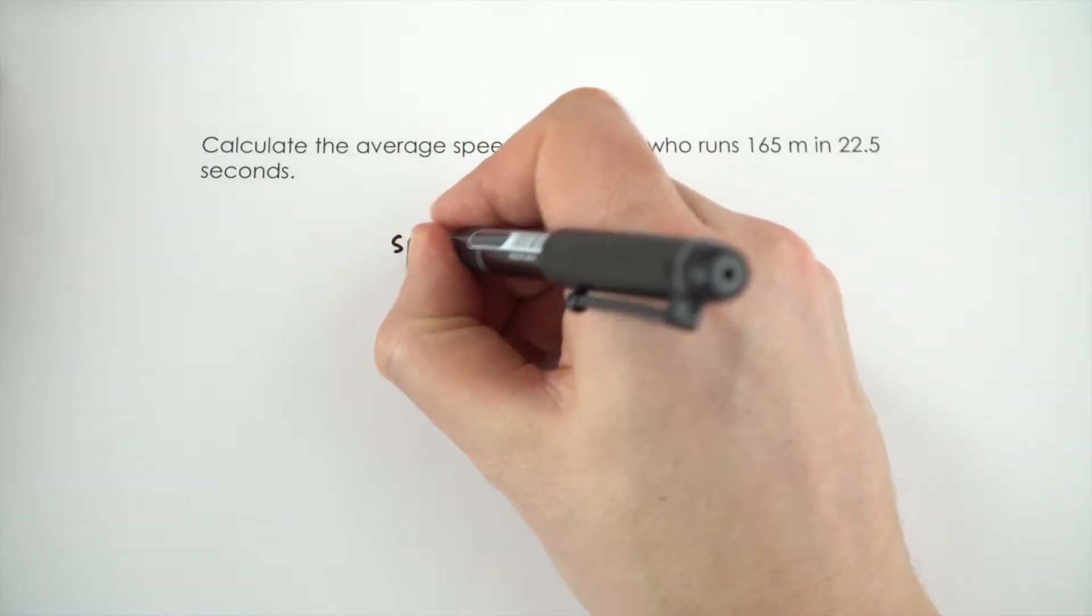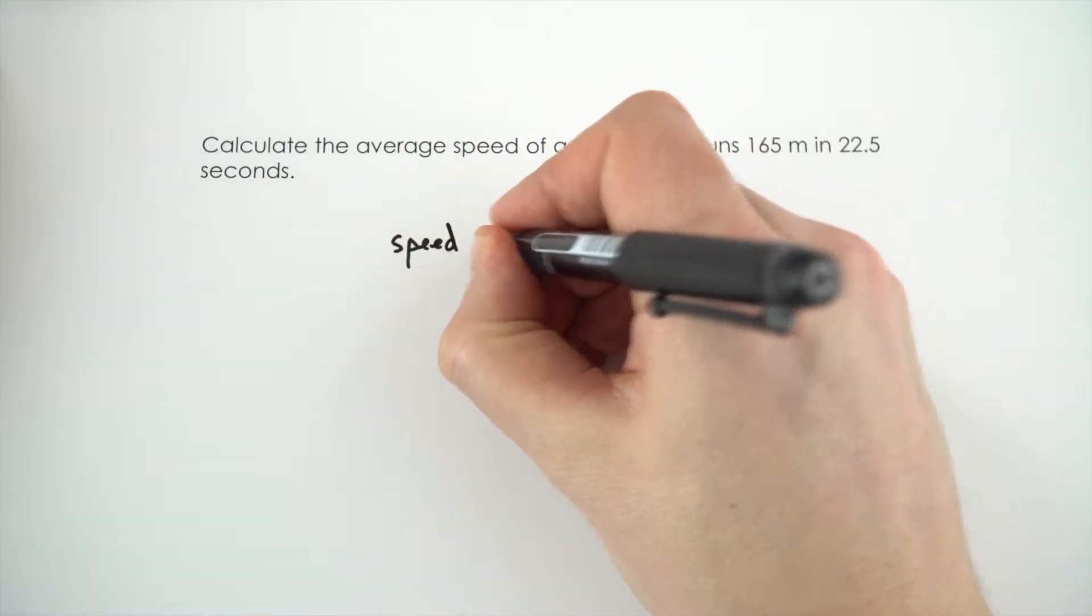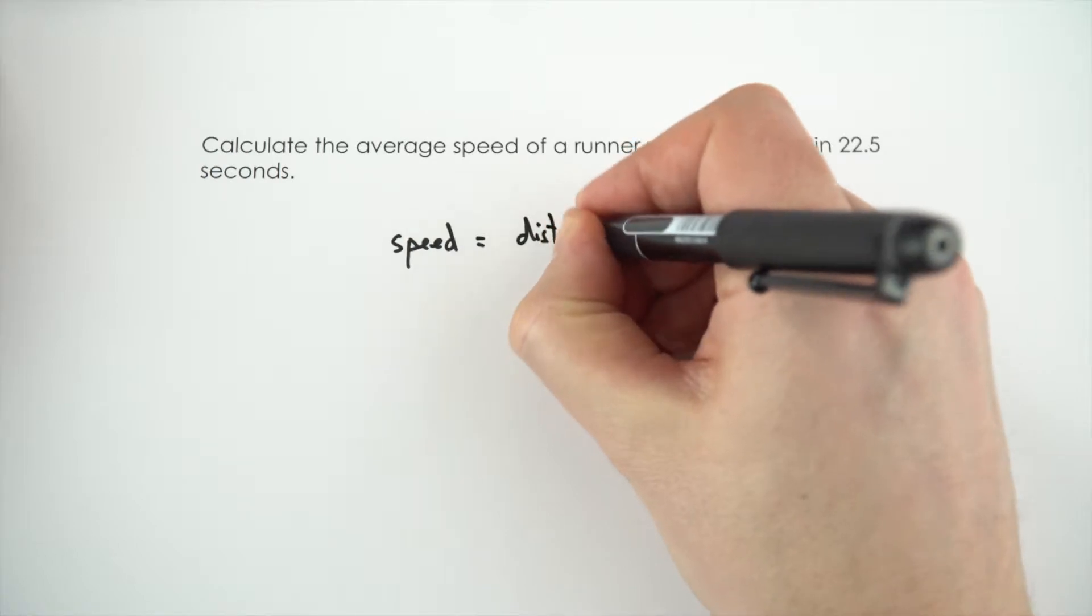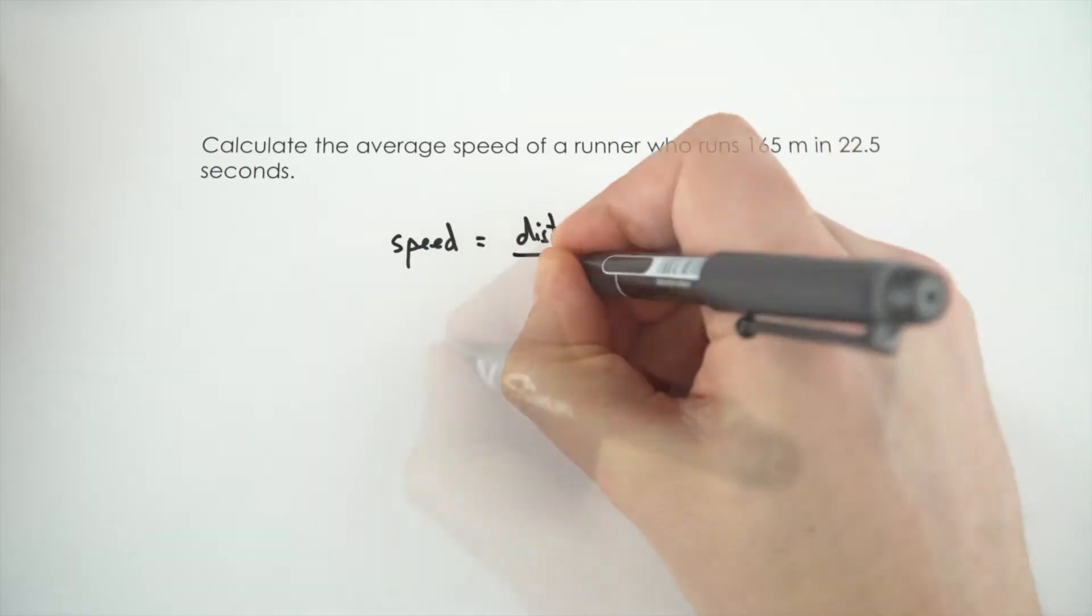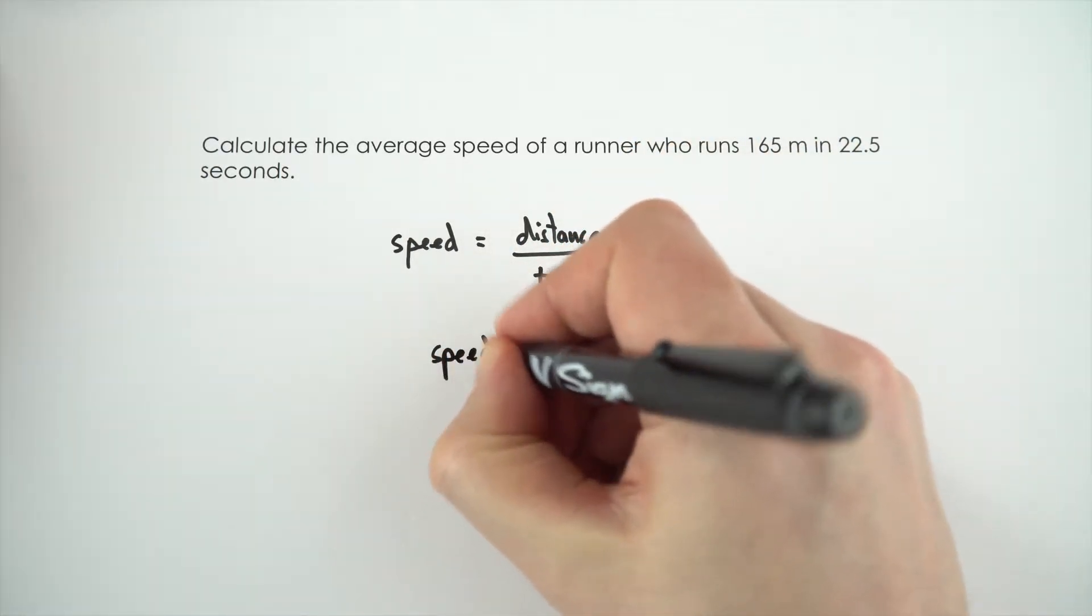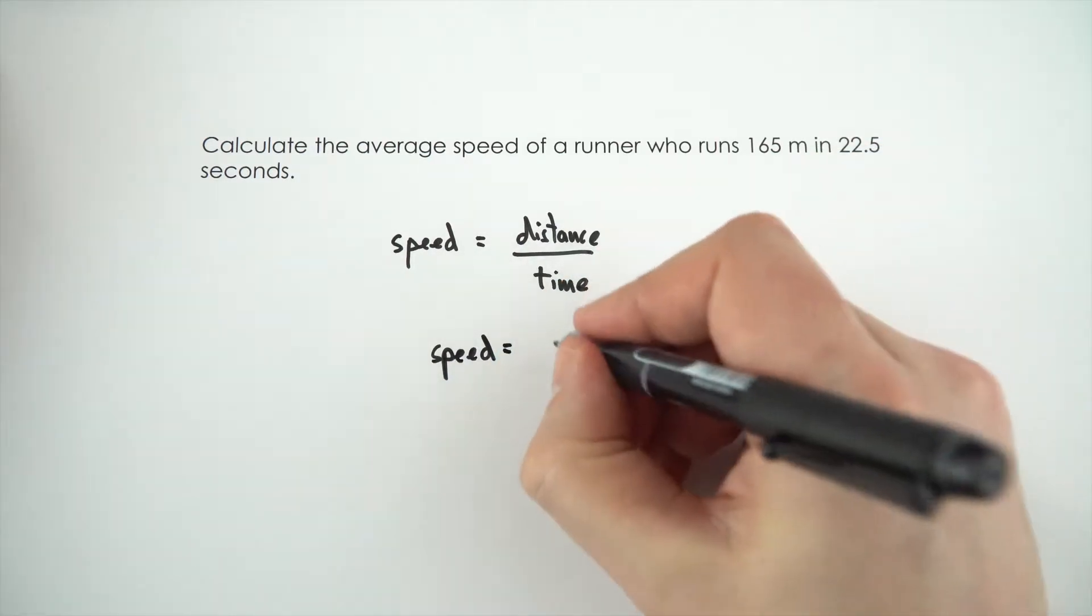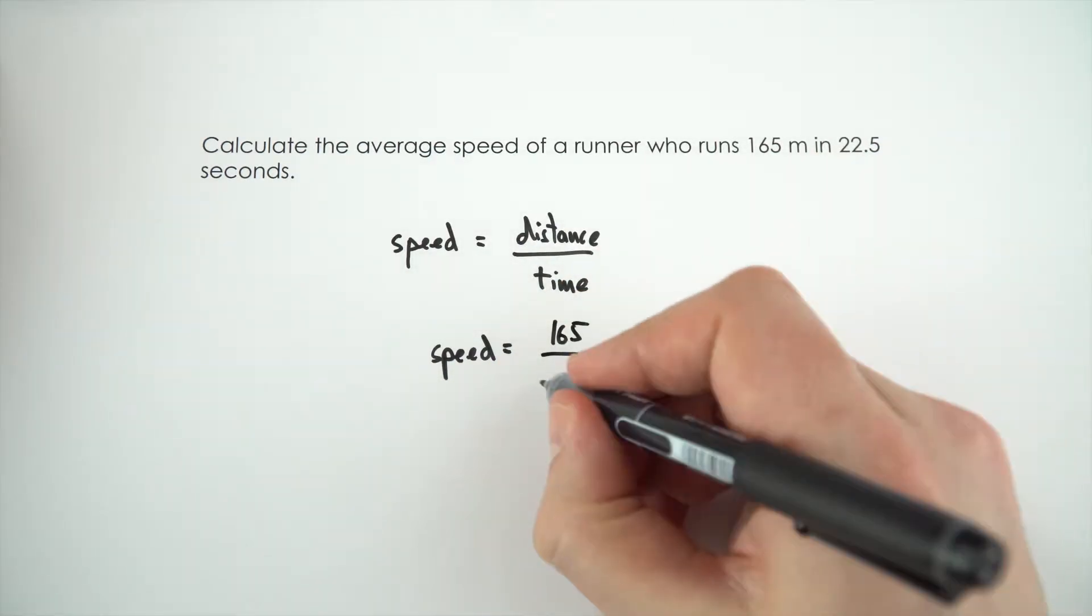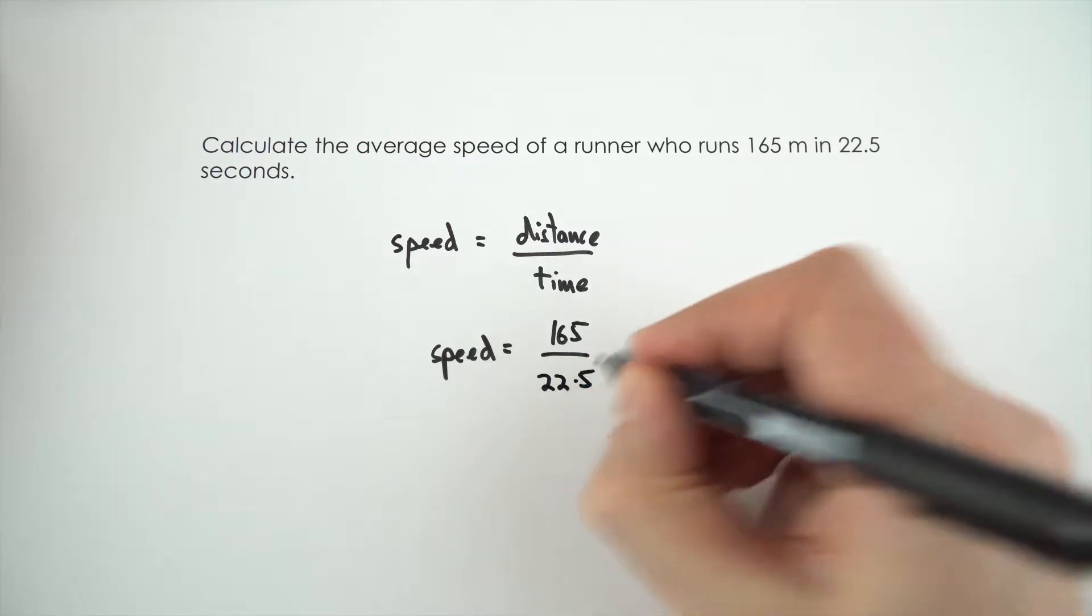So the first thing I'm going to do is write down the equation that says speed is equal to distance divided by time. And this then means that their average speed is going to be equal to the distance of 165 metres divided by a time of 22.5 seconds.